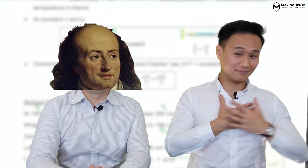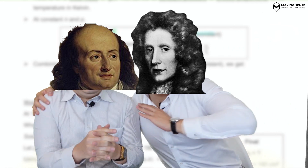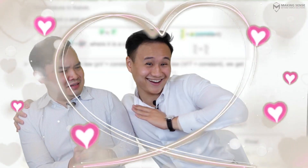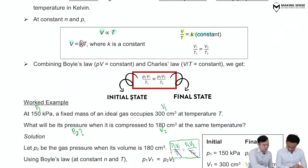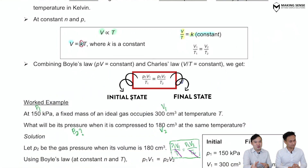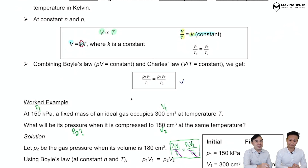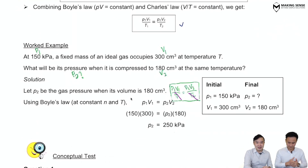Remember: he's Boyle, I am Charles! We are going to combine them. If we combine Boyle's Law and Charles's Law we get the combined gas equation. One represents the initial state and two represents the after state. Shall we take a look at a worked example to illustrate how to apply this formula?